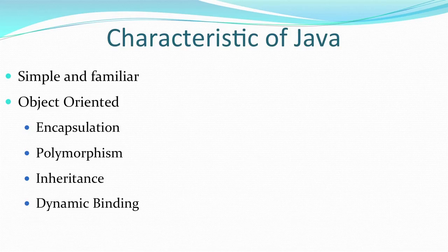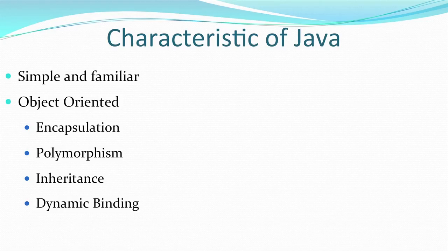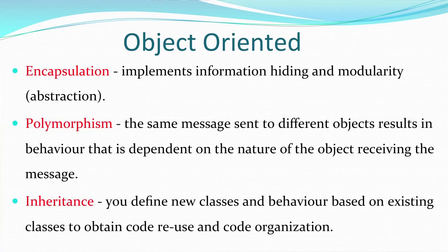The characteristics of Java: it is simple, flexible, and has a familiar syntax. It is object-oriented, meaning it fulfills four basic object-oriented criteria: encapsulation, polymorphism, inheritance, and dynamic binding. Encapsulation means the data and functions are enclosed in a single unit, hidden from the outside world — implementing information hiding and modularity, breaking code into small, easily manageable independent units.